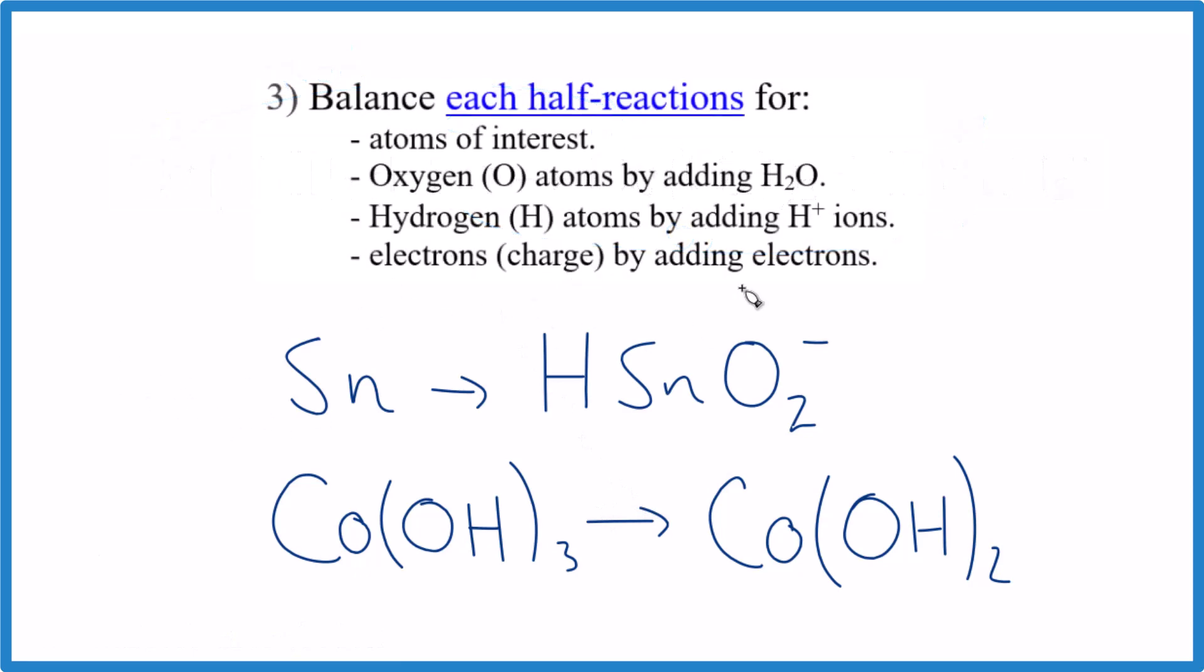This is a little bit of work, but if you follow the steps you'll be fine. Atoms of interest: we have tin here and here, one on each side—no problem. Cobalt here and here—those are balanced. Now we need to balance the oxygen atoms. We're going to add water because the reaction is happening in water. We have two oxygens here, none here, so I'm going to add two water molecules.